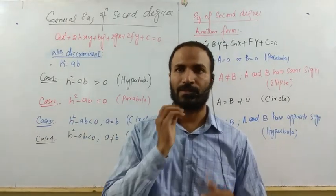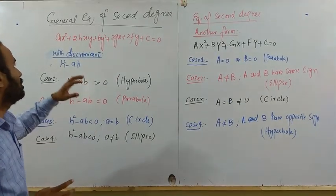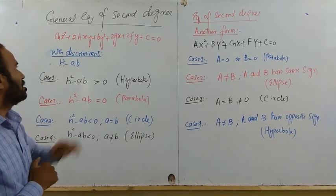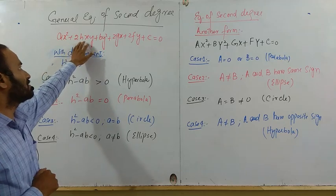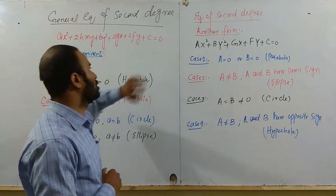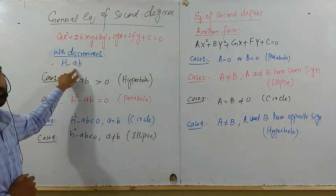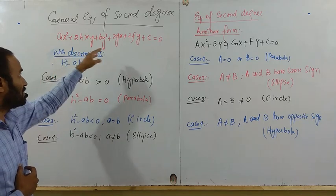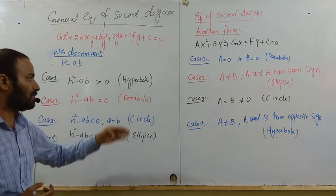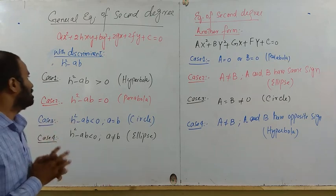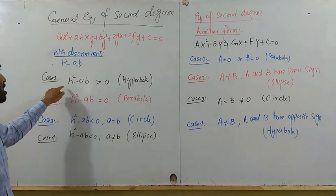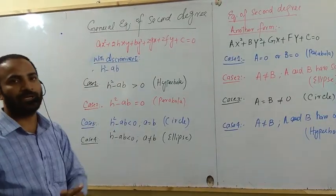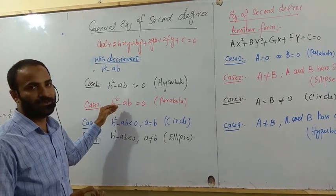Another very important question in different exams: a general equation of second degree will be given to you. If such type of equation is given: Ax² + 2Hxy + By² + 2Gx + 2Fy + C = 0, with discriminant H² - AB. The question will ask what this equation represents - hyperbola, parabola, circle, or ellipse. You will give answer with help of the discriminant. If H² - AB is positive, then it's a hyperbola.